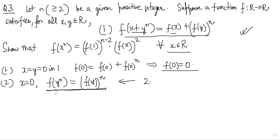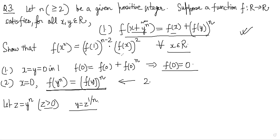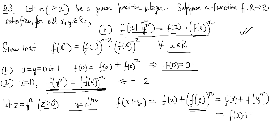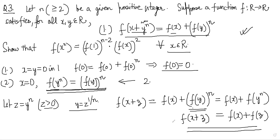Now let z = y^n where z > 0, so y = z^(1/n). Substituting back, the functional equation becomes f(x + z) = f(x) + f(y)^n = f(x) + f(y^n) = f(x) + f(z). This is Cauchy's functional equation: f(x + z) = f(x) + f(z).